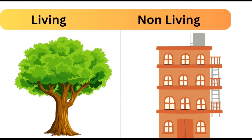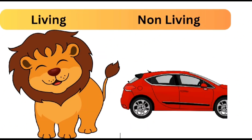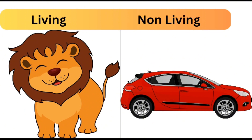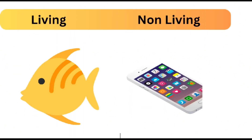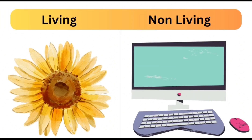As you can see, tree is a living thing and building is a non-living thing. Lion is a living thing and car is a non-living thing. Fish is a living thing and mobile is a non-living thing. Flower is a living thing and computer is a non-living thing.